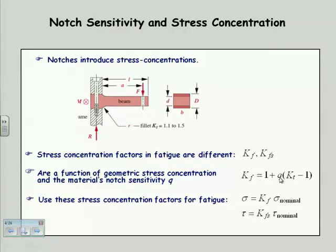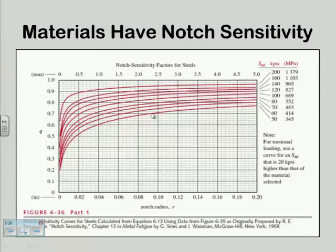Notice that if Q was zero, K_f would be one — it would take away all the K_t effect. And we can see from the chart that Q could be as low as about 0.2. So I can get like two-tenths of K_t if I have a material that is very insensitive to notches at that particular radius. More often you're going to be up in the range where for a low-carbon steel you might have Q of about 0.7 — that's still a 30% reduction. High-strength steel may only give a 5% reduction.